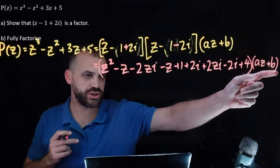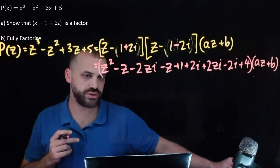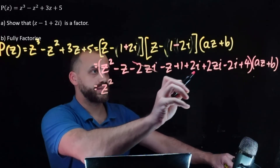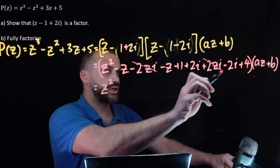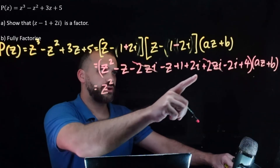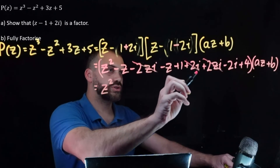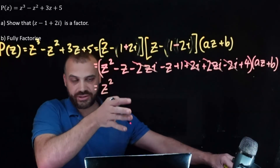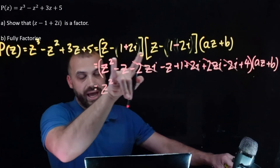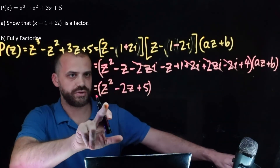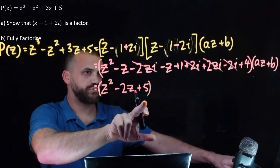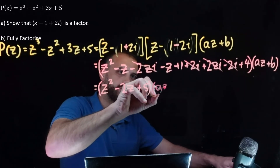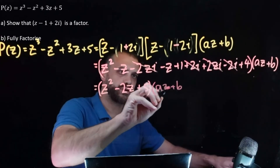I've done the full expansion of these two complex factors, which gives nine terms, and I can simplify those. It's worth noting that whenever you do this you'll end up with terms that cancel each other out — negative 2zi and positive 2zi, positive 2i and negative 2i. So I have z squared minus 2z plus 5, and I've still got that az plus b.